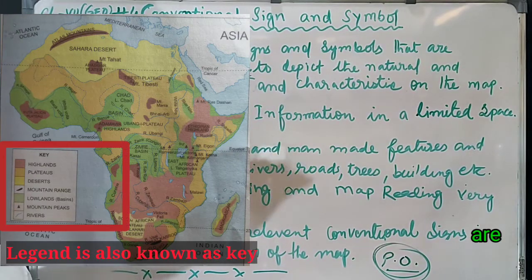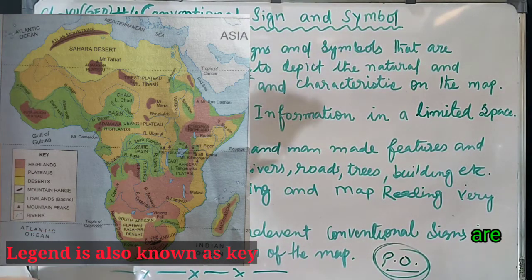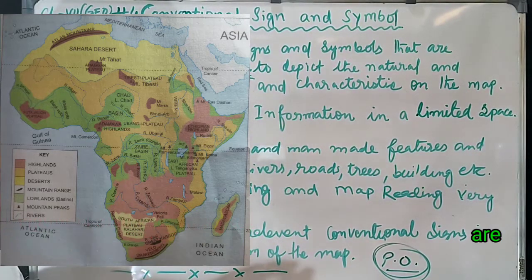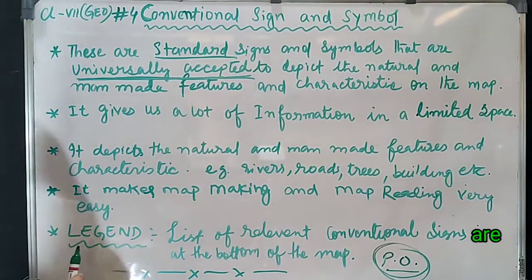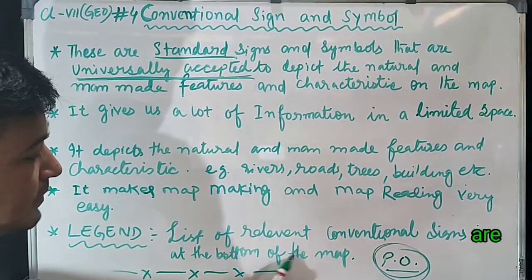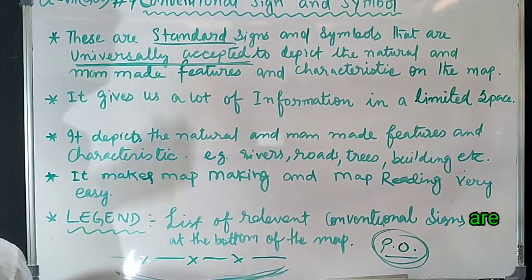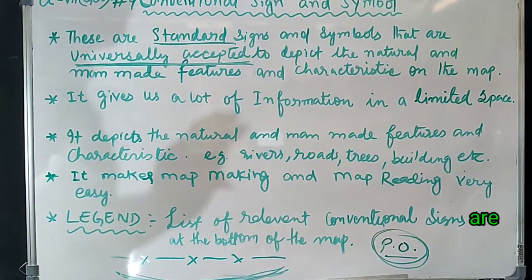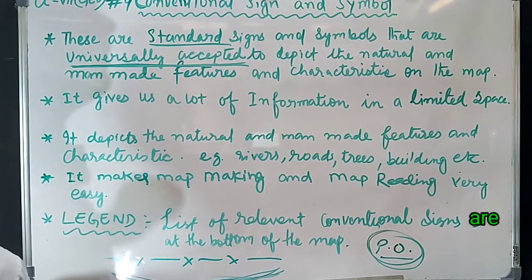You might have seen at the bottom of a map an index is given — showing which symbols represent which features. That index is known as a legend. So, a legend is a list of relevant conventional signs shown at the bottom of the map. In your book, at pages 14 to 18, conventional signs are given — go and see them and learn. By this we come to the end of our chapter. Pause the video or take a screenshot to write notes, and I will also give you the solution of the exercise of this chapter.